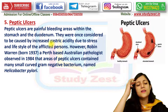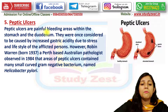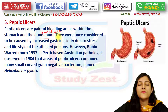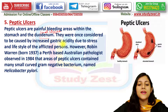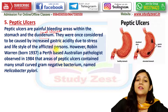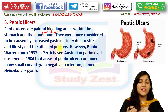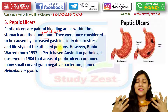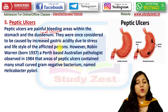The next disease is peptic ulcer. These are painful, bleeding areas within the stomach and the duodenum, which is the starting part of the small intestine. They were once considered to be caused by increased gastric acidity due to stress and lifestyle of the afflicted person.